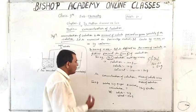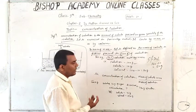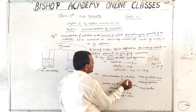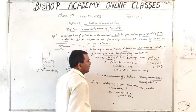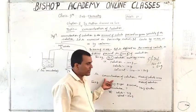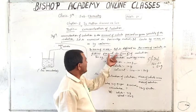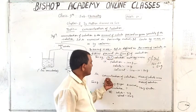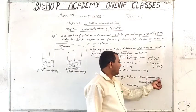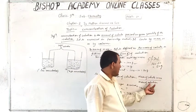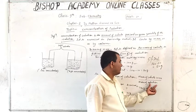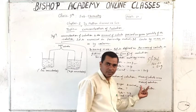Okay, so the formula: Concentration of solution by mass equals mass of solute multiplied by 100, upon mass of solution.